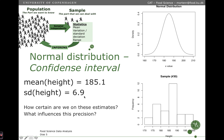But how certain are we on these estimates, and what influences this precision? Naturally, we would think that the more samples we have, the more certain we are that the mean calculated from the samples is actually close to the mean of the true distribution in the population.